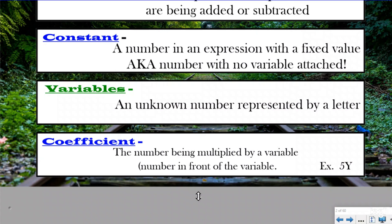Throughout this entire playlist we'll be representing variables with either X or Y. We have one more term: 'coefficient.' A coefficient is the number being multiplied by the variable — in other words, it's the number in front of the variable. So for this one the variable would be Y and the coefficient would be five, because when they're next to each other we're really saying five groups of Y. We just call that number in front of a variable a coefficient.